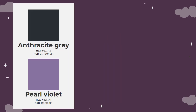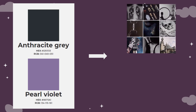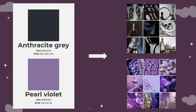The way the workshop works is that you will randomly generate a color, either for yourself or for the group that you are participating with, and you will make a mood board based on that color. As you can see, these two colors became these mood boards.